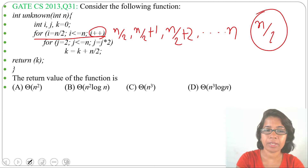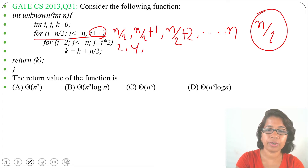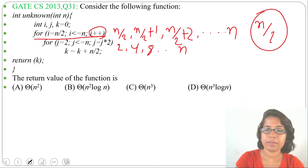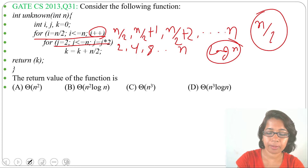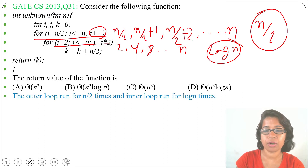Let's check how many times the inner loop runs. Initially j equals 2, next it will be 4, then 8, and so on until it reaches n. Since j doubles each time, j changes log n times. So the outer for loop runs n/2 times while the inner for loop runs log n times.